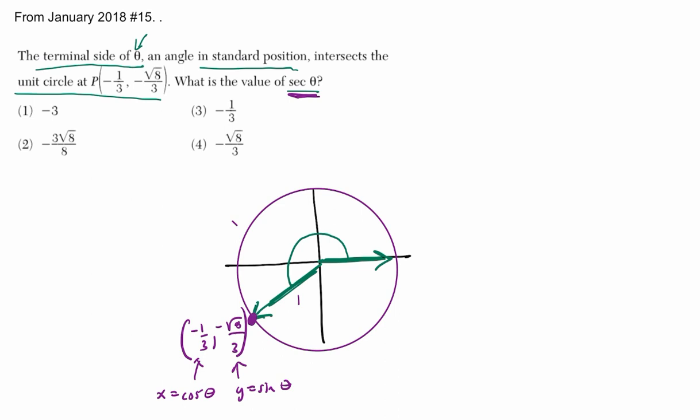Now the secant is the reciprocal of the cosine, right? Secant of theta is 1 over cosine of theta. So if the cosine of theta is negative one-third, the secant is the reciprocal of that.